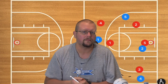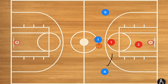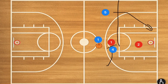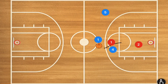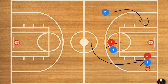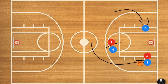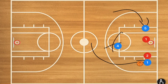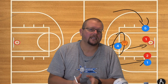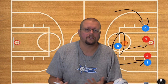Another option is player four setting a screen for player one, with player five still cutting down from the free throw line extended after player four sets that screen. Player one uses that screen, drawing player two out, and this could be an easy pass to player five for a layup. Or if player one comes down to protect the key, player four can stay and potentially be open for a 15-foot jump shot — or player four could pull it out and set up the offense.